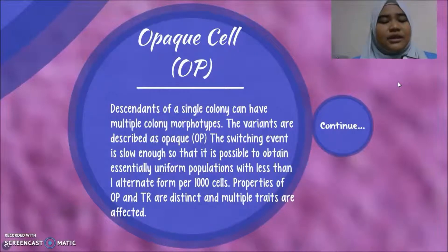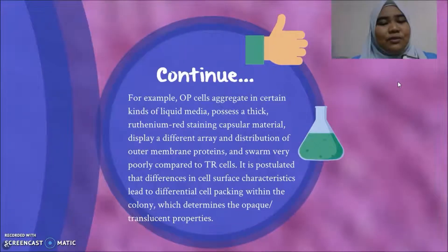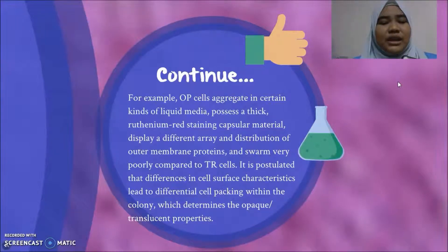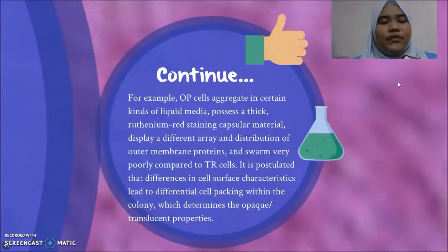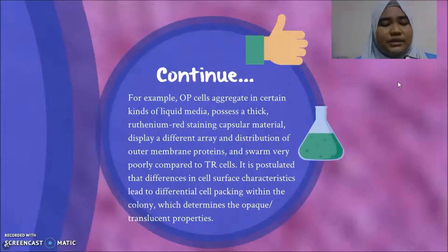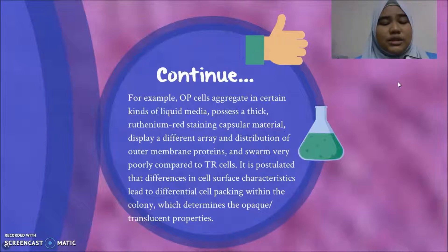Properties of OPaC and TR are distinct and multiple traits are affected. For example, OPaC cells aggregate in certain kinds of liquid media, possess thick ruthenium red-staining capsular material, display a different array and distribution of outer membrane proteins, and swarm very poorly compared to TR cells. It is postulated that differences in cell surface characteristics lead to differential cell packing within the colony, which determines the OPaC or translucent properties.